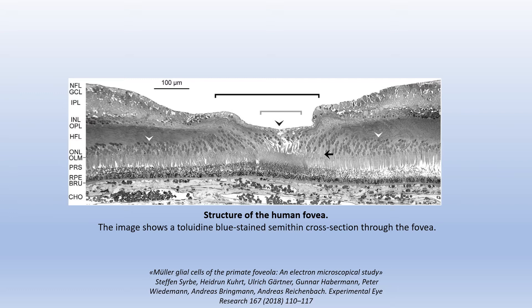The foveola is composed of a thin inner layer, which contains the somata and inner processes of specialized Müller cells and lies in front of the outer nuclear layer, and the fovea externa, which contains the elongated central cone photoreceptors. The outer nuclear layer of the foveola is composed of obliquely arranged rows of cone cell somata, which are separated from the outer limiting membrane by a layer containing the outer fibers of cone cells and the Müller cell processes. The white arrowheads indicate the central-most rod nuclei, and the black arrowhead indicates the deepest point of the foveal pit.